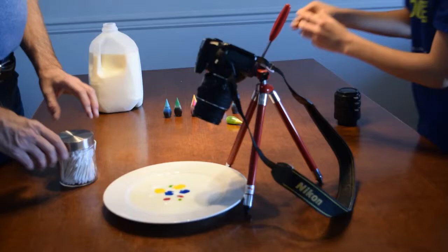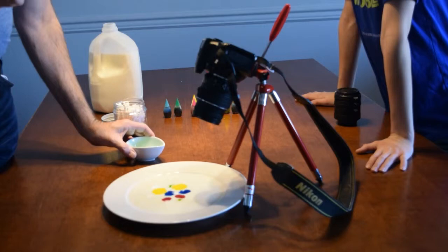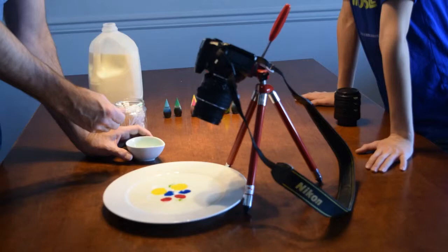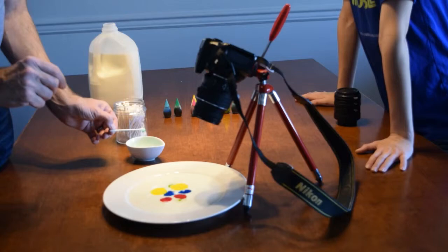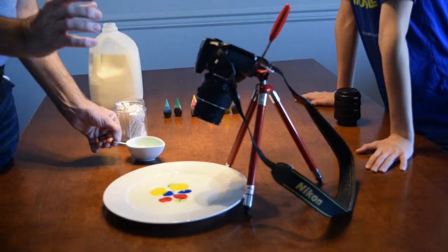The next thing you do is you take a q-tip and you dip it in dish soap. What is going to happen is you dip the q-tip in the dish soap and then you plunge the q-tip into the middle of the plate filled with the milk and food coloring. The fat molecules in the milk, this is where the science comes in kids, the fat molecules in the milk will bind to the soap and explode in a kaleidoscope.